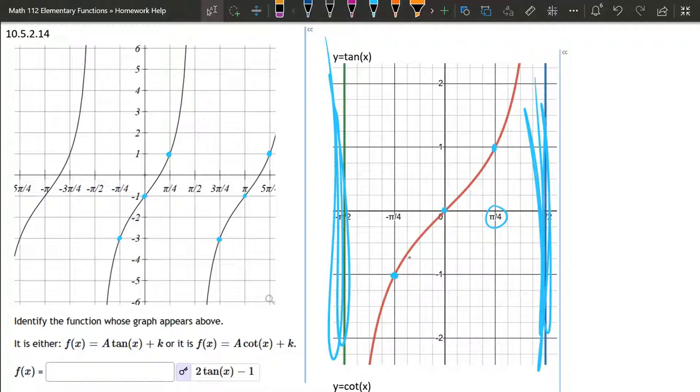Now if we try to look at the period here, the period should be pi, and it goes from, well there's pi, this is 5 pi over 4, to pi over 4, the difference is pi. So the period is 1 pi, which is what it should be.